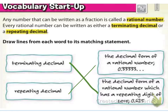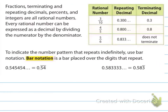A repeating decimal is when it goes on forever — like the threes that go on forever. A terminating decimal is where it ends; we just have 0 repeating after it. And of course, if you add a bunch of zeros you can basically block them all off and just end at the 5. Fractions, terminating and repeating decimals, percents, and integers are all rational numbers.